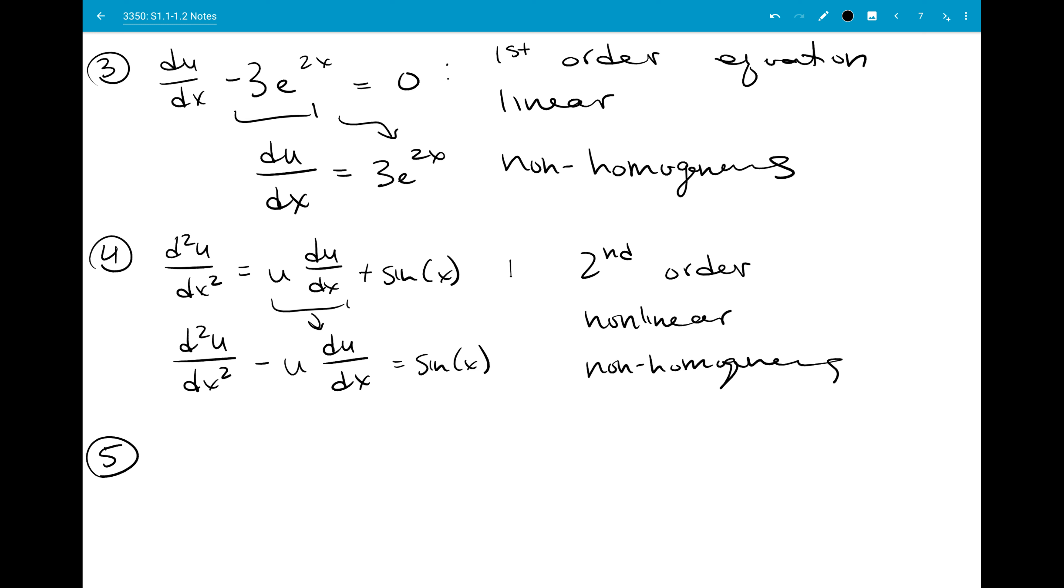I guess real quick I could show you an example of a partial differential equation. Would be du dx squared plus d2u dx squared plus d2u dy squared is equal to x squared plus y squared, I guess. So it's second order, partial differential equation, it's linear and non-homogeneous. So all the same classifications work, they just have mixed derivatives, or sorry, partial derivatives in them with respect to different variables.